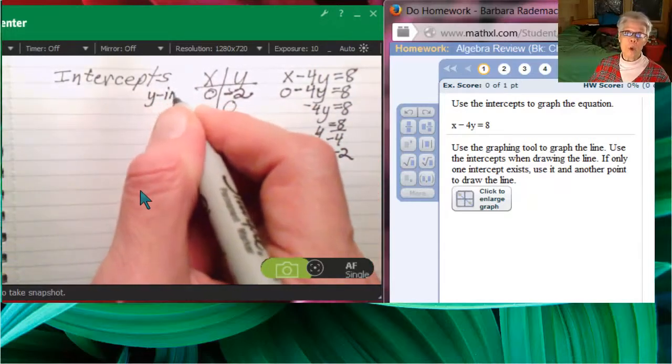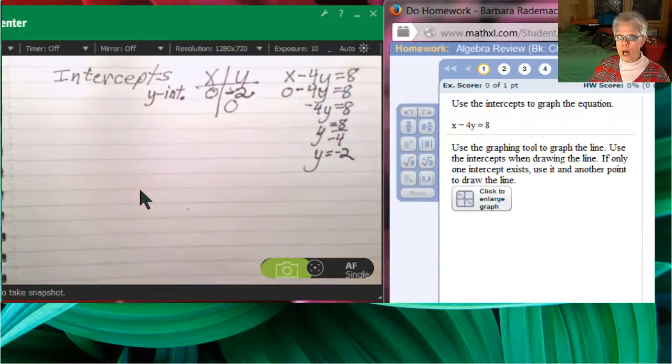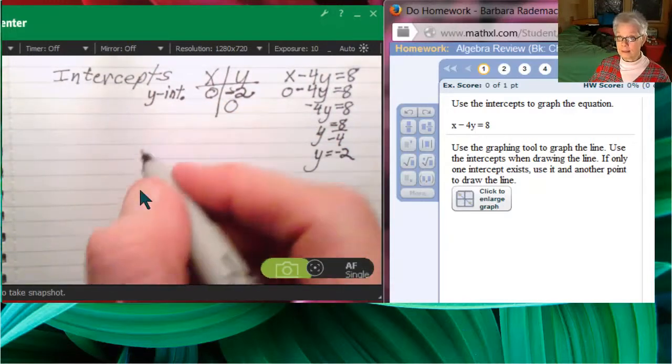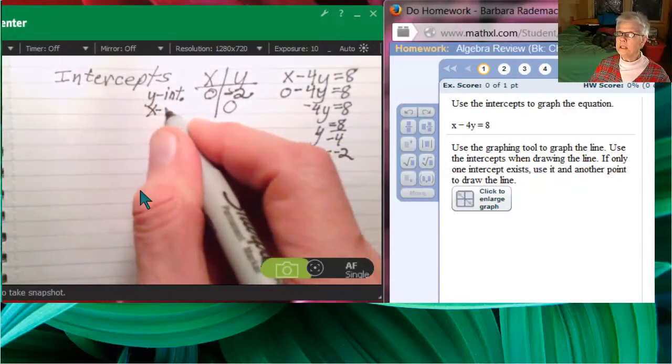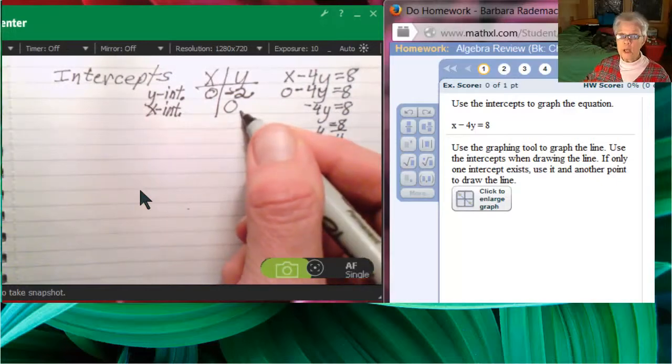This is the y-intercept, where the line crosses the y-axis. You must write these as points. You must write them with parentheses.